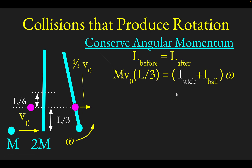After the collision, the angular momentum of the system is best expressed as I·ω — analogous to linear momentum being mass times velocity, angular momentum is moment of inertia (rotational mass) times angular velocity. We need to find the moment of inertia of the stick and ball about the center of mass.